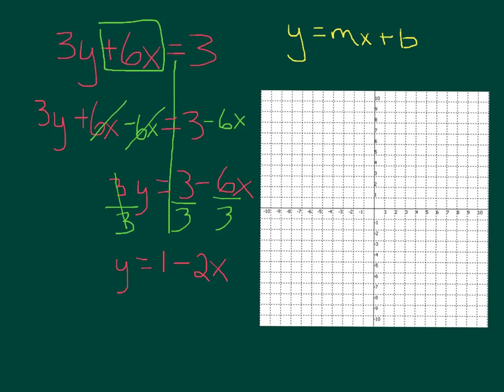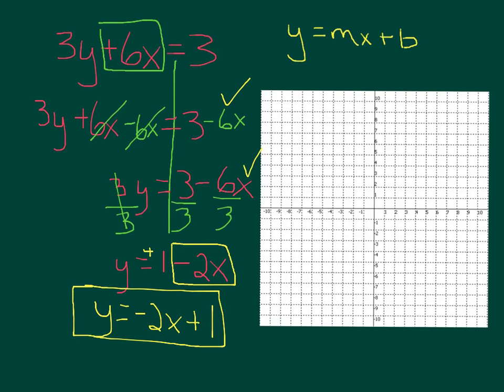So y = 3 divided by 3 is 1, minus 6 divided by 3 is 2x. Not quite done yet, because we have to rewrite this equation in the correct order. The slope is -2x and the y-intercept is positive 1. So y = -2x + 1. That is my final equation. We had to subtract, divide, and then switch.